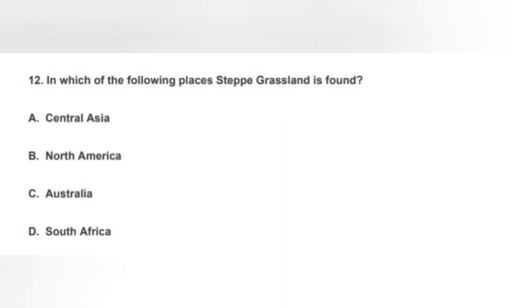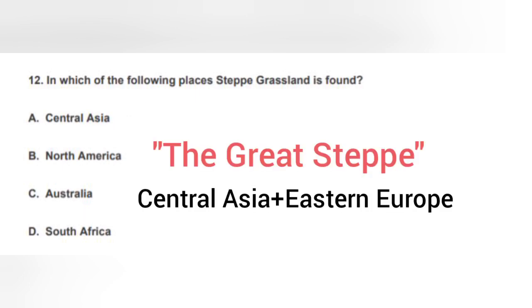The next question is: In which of the following places is steppe grassland found? The correct option is A — the Central Asia region. Yes, the world's largest steppe region is found in Central Asia and Eastern Europe, known as the Great Steppe.